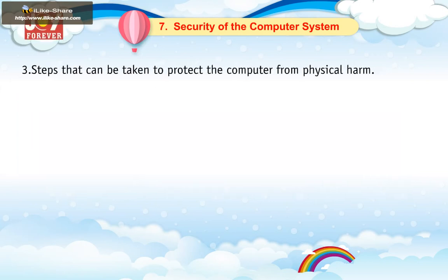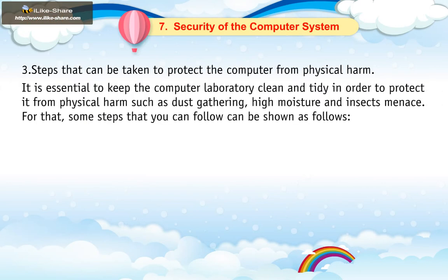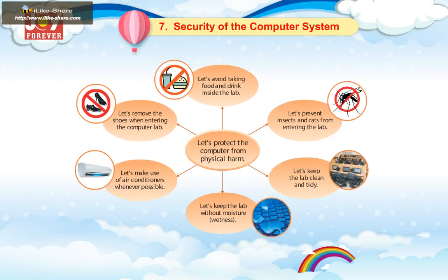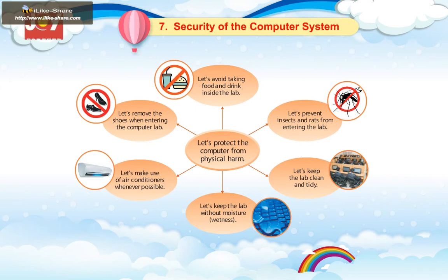Steps that can be taken to protect the computer from physical harm: It is essential to keep the computer laboratory clean and tidy in order to protect it from physical harm such as dust gathering, high moisture, and insects. Some steps to follow: avoid taking food and drink inside the lab, remove shoes while entering the computer lab, prevent insects and rats from entering the lab, make use of air conditioners whenever possible, keep the lab clean and tidy, and keep the lab free of moisture.